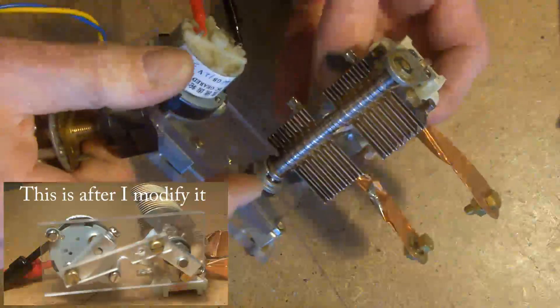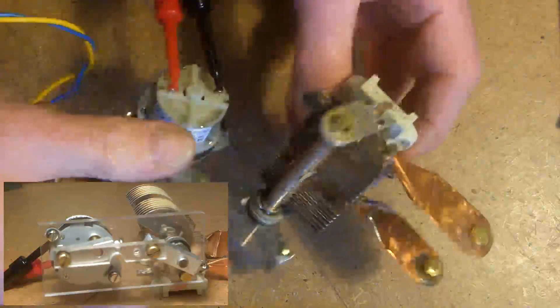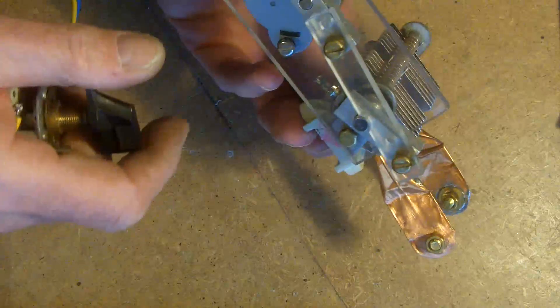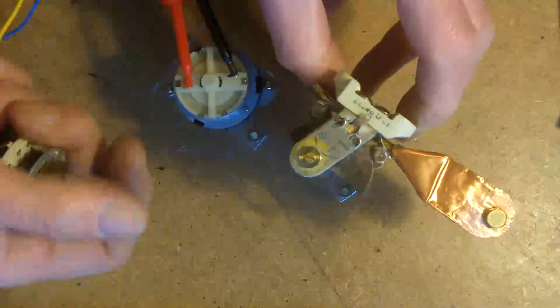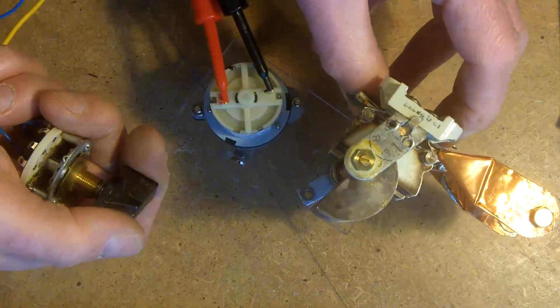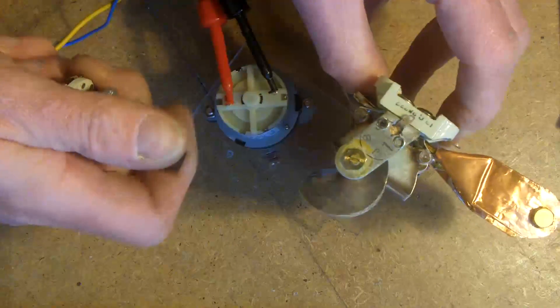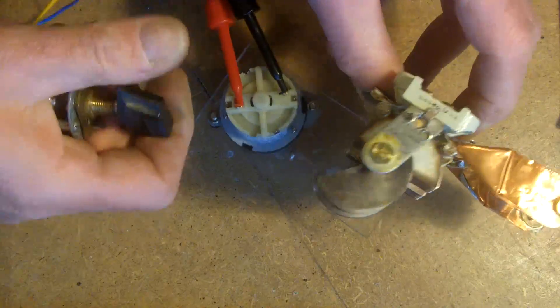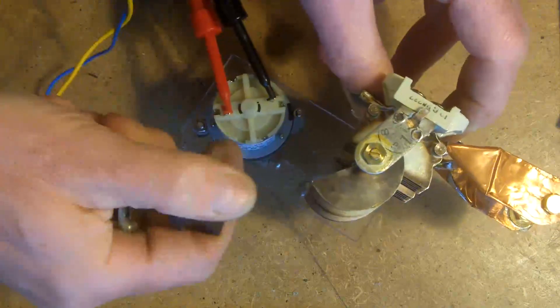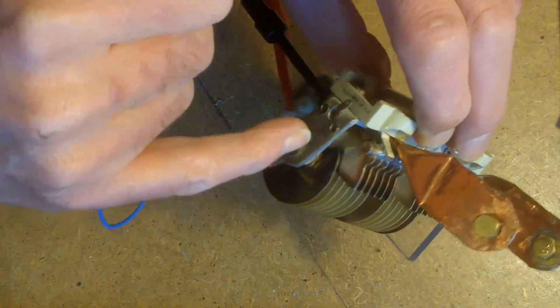There. Hopefully I'm getting this in focus. And that little mouse hole is just clearing the shaft there. And then that's fully open there. I think that's right. Yeah. So you can see I've still got a bit of engagement there.